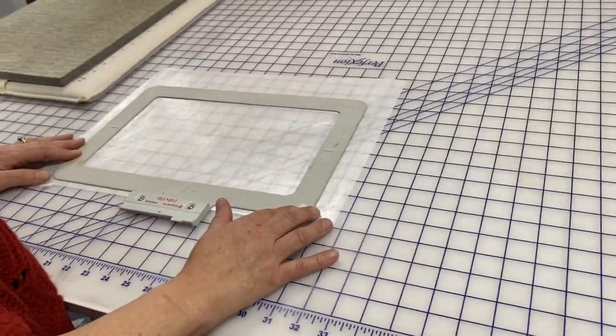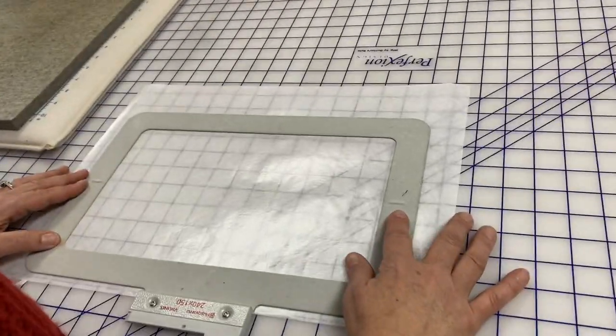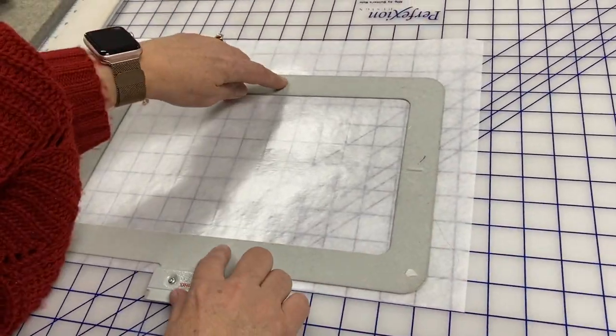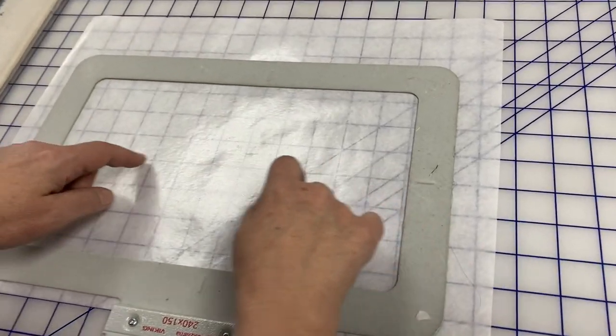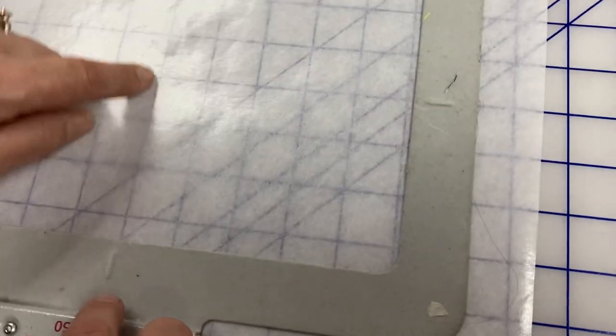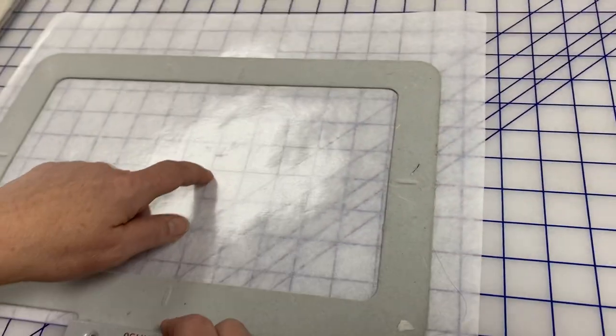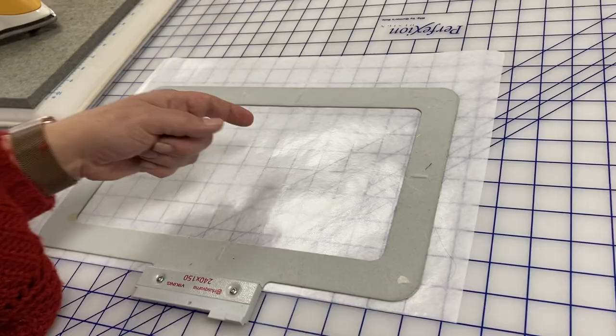I'm going to place it on the cutting mat so that I line up the little marks on the hoop, the centering marks, with the lines on the cutting mat so that when I come back with it folded, I can unfold it and know where my center of my hoop is.